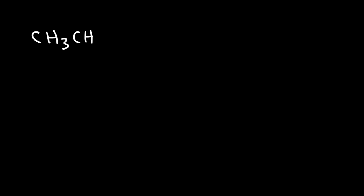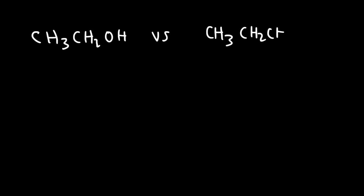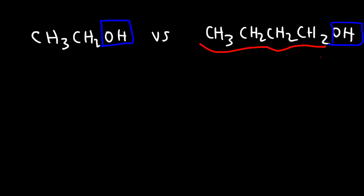What if we compare ethanol with 1-butanol? Both of these molecules contain hydrogen bonds. However, the size of the hydrocarbon chain is not the same — butanol has more atoms. In addition to hydrogen bonds, it's going to have more London dispersion forces, and as a result it's going to have a higher boiling point. Molecules with a large number of carbon atoms tend to have a higher boiling point than molecules with only a small number of carbon atoms, assuming everything else is the same.